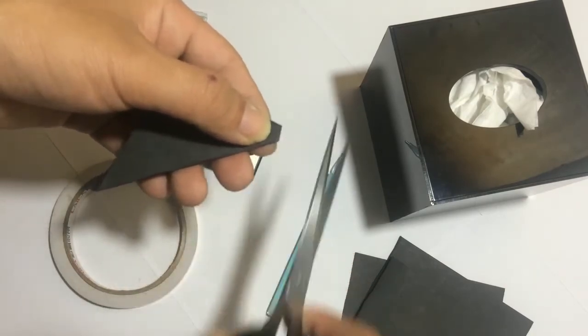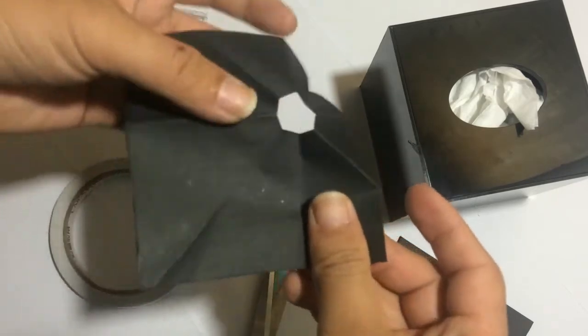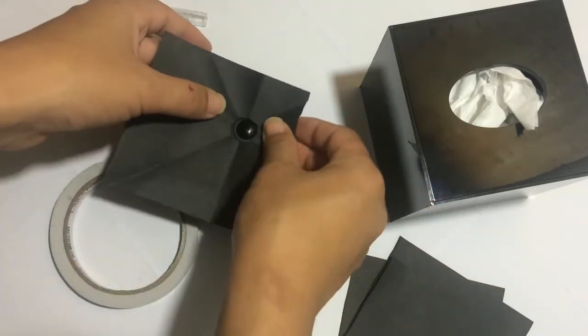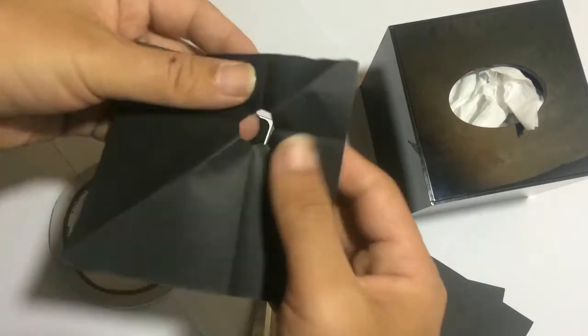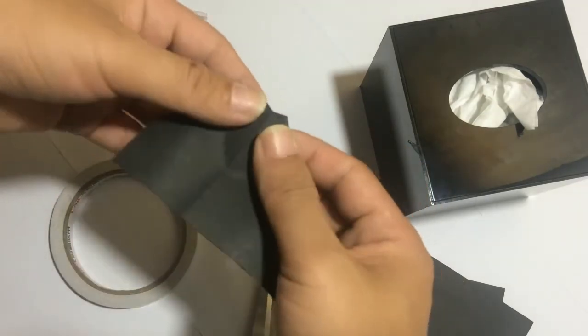Be sure to cut it smaller than you would think at first. You can always cut it larger later. Unfold the paper and trim it a little bit more if you want a big lens hole.